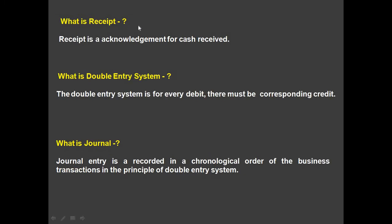What is a receipt? A receipt is an acknowledgement for cash received. What is the double entry system? The double entry system means for every debit there must be a corresponding credit.